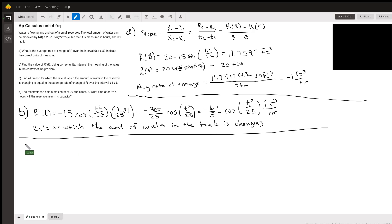Okay, for part C, find all times T for which the rate at which the amount of water in the reservoir is changing is equal to the average rate of change of R over the interval. So basically what they're saying is we're going to take our answer from part B, set it to the answer of part A, and find a T that will fit.